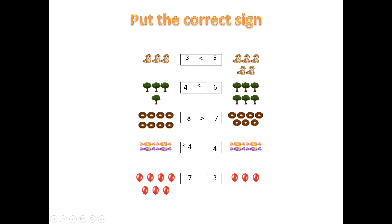Now the next one. Count: 1, 2, 3, 4. Here also: 1, 2, 3, 4. Here also, we have 4. Here also, you have 4. So, what will be the answer? 4 equals 4.